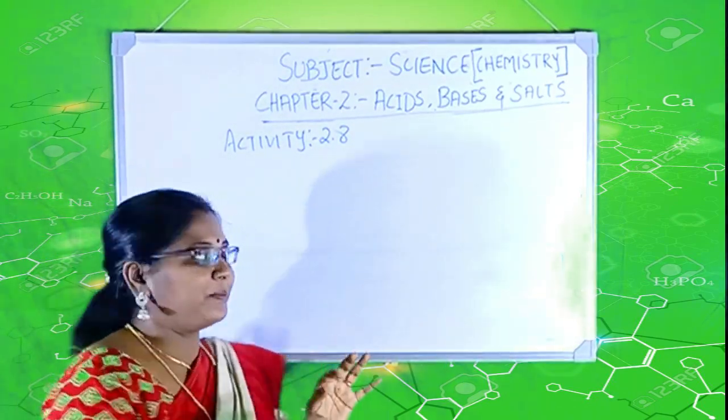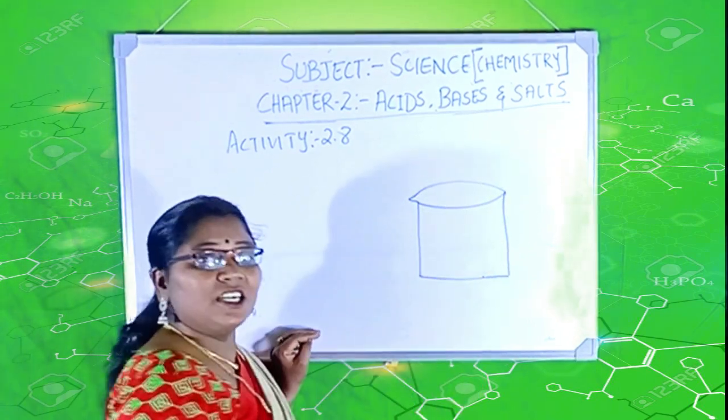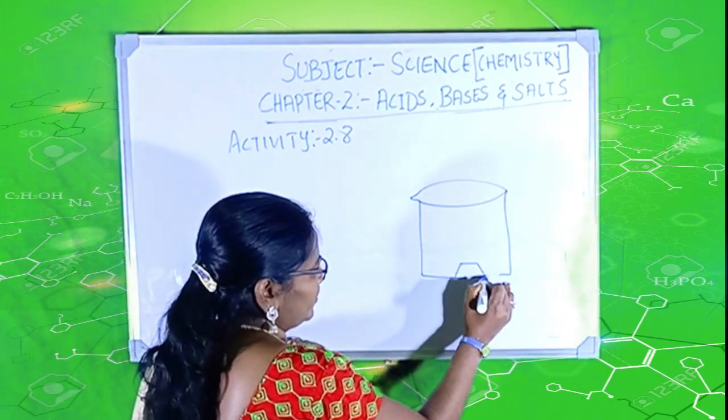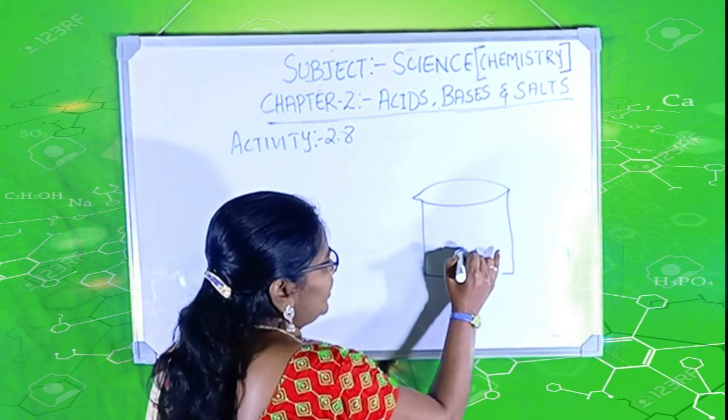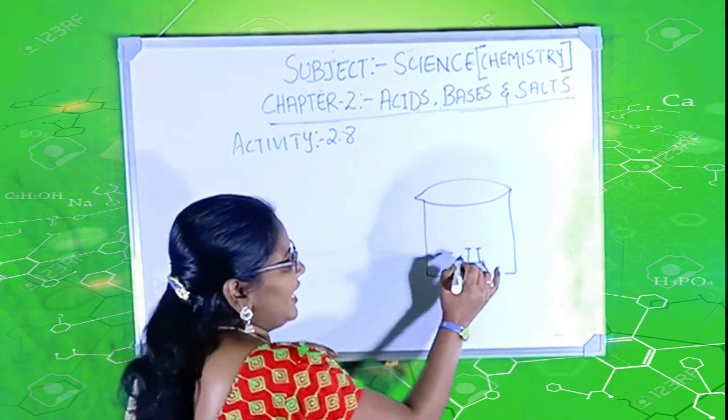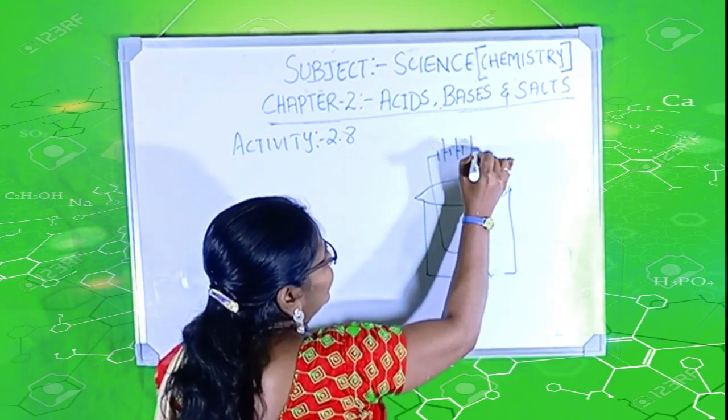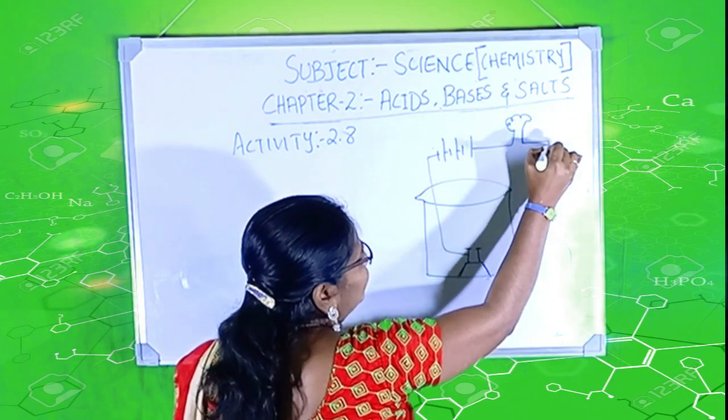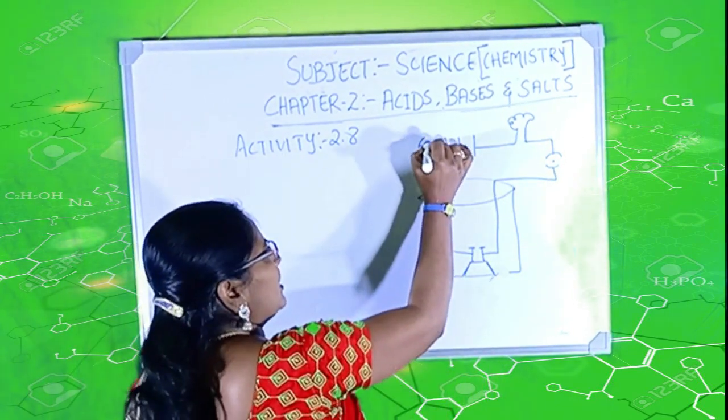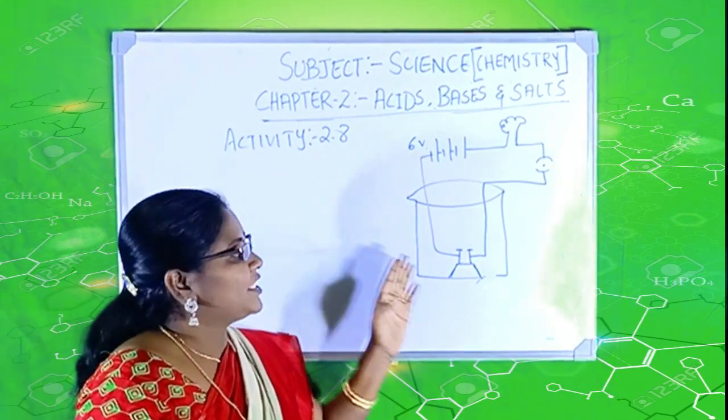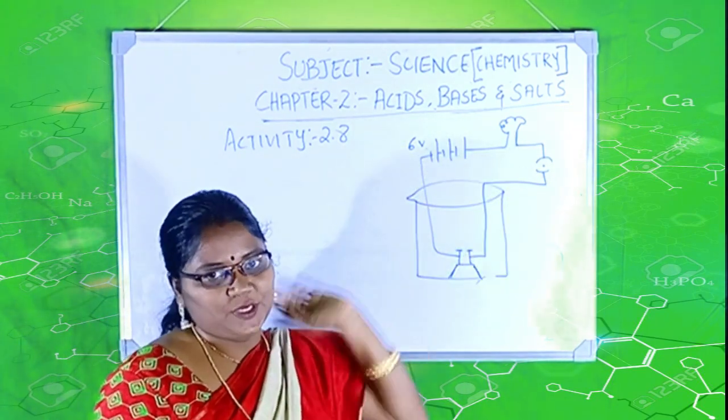Now, what the activity 2.8 tells? It tells us, take a beaker. Take a rubber cork. In a rubber cork, fix two iron nails. Let me connect the ends of the iron nails to a 6-volt battery.